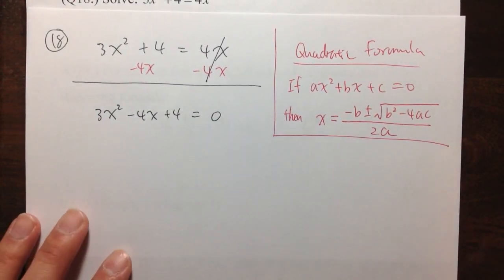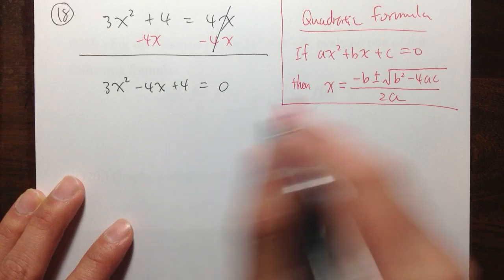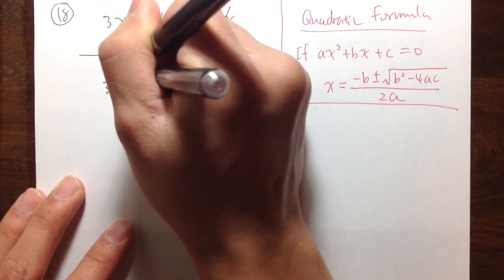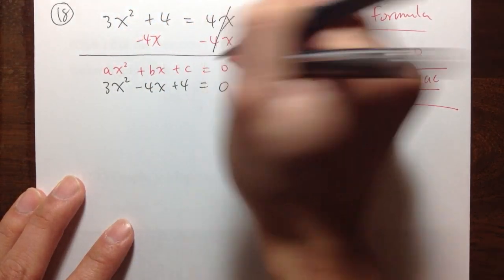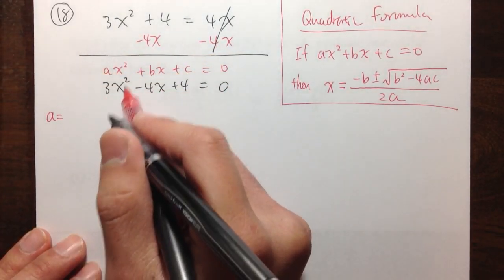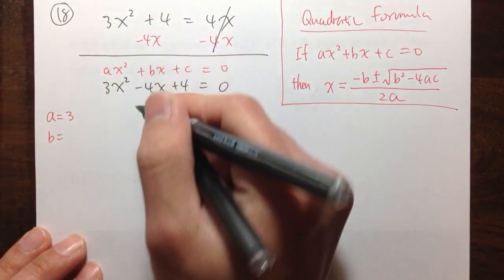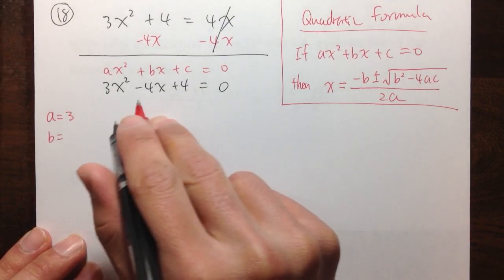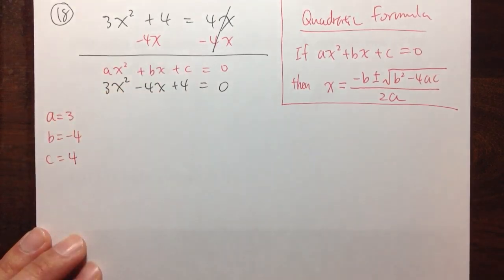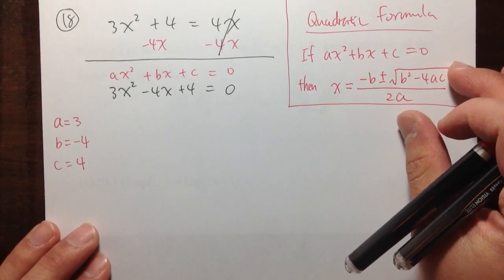We are going to use the quadratic formula because this is not factorable. We already have it in the format ax squared plus bx plus c equals 0. So I will identify a — it's the number in front of x squared, which is 3. The b is the number in front of x, which is negative 4. And c is just 4.